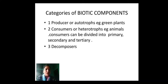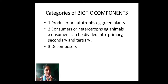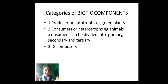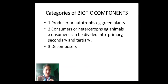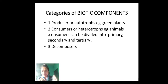Let me give one example to understand primary, secondary, and tertiary consumers. Suppose a grasshopper is eating grass. Since the grasshopper is feeding directly on the grass, it becomes your primary consumer. Suppose a frog is eating that grasshopper — your frog becomes your secondary consumer. And if that frog is being eaten by a snake, that snake becomes your tertiary consumer.